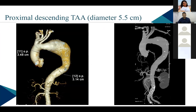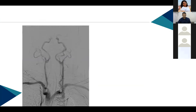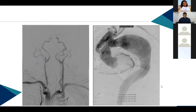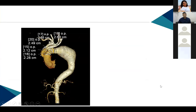A CTA confirmed the measurements had changed drastically. New grafts were ordered. The next day, two 36×36×200 mm Relay NBS bolt-in grafts were deployed, distal first then proximal, achieving a decent seal despite the proximal graft not being oversized. The result was good, the patient had an uneventful post-operative course and was discharged at end of week. At one-month follow-up, the patient was fine with no complaints.